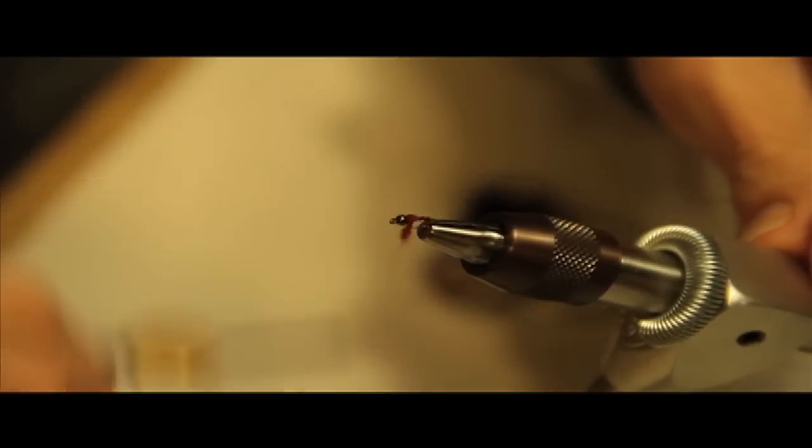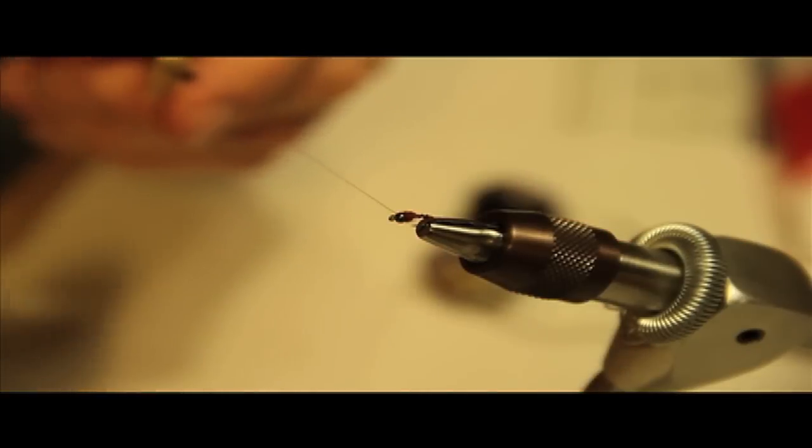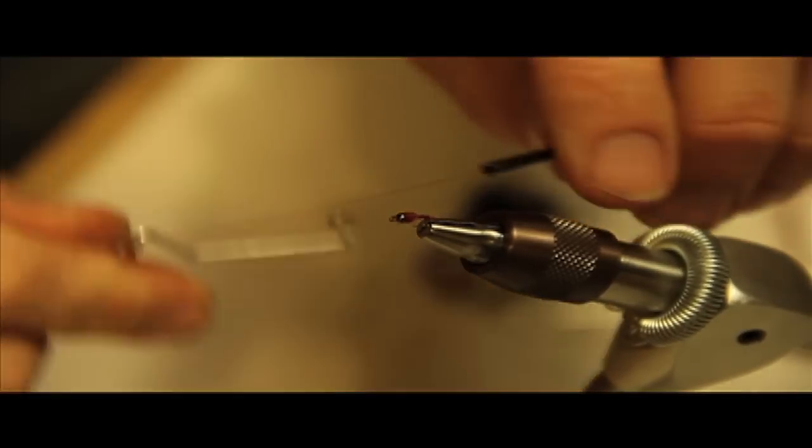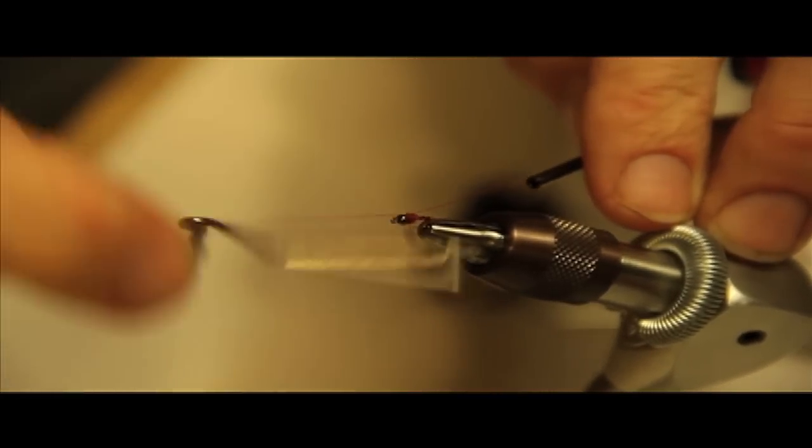and kind of cover over it, hide it with the dubbing, like so. Whip finish, and you have a perfectly acceptable winter trout fly.